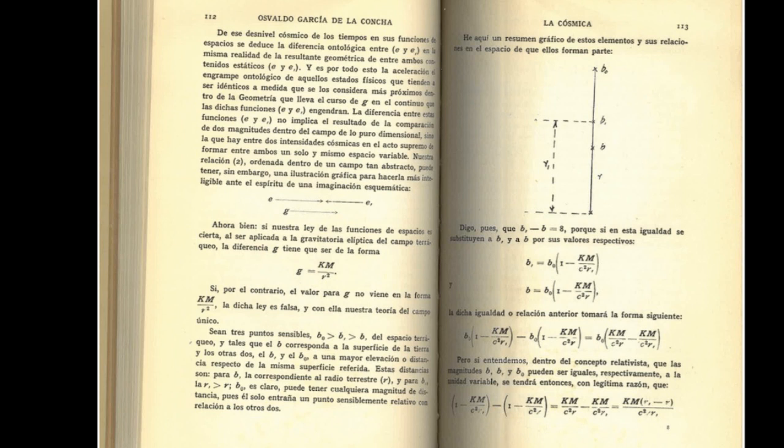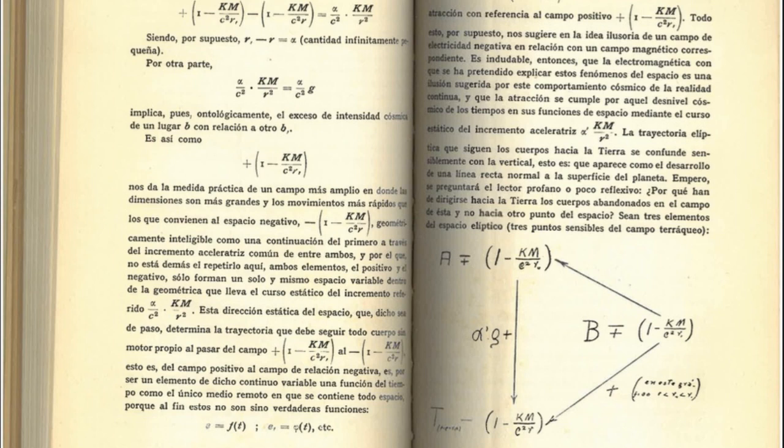It will finally be, being, of course, B comma negative B equals X divided by C square times KM divided by B square, being, of course, B comma negative B equals X infinitely small quantities.